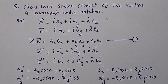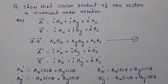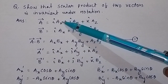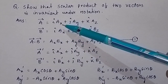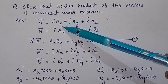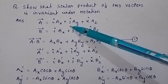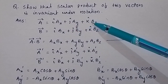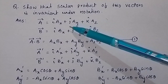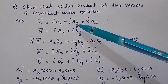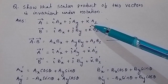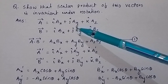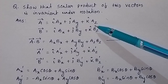The scalar product of two vectors is invariant under rotation. Consider two vectors A and B. Suppose vector A is equal to i-cap AX plus j-cap AY plus k-cap AZ, where AX, AY, and AZ are components of the vector along the X, Y, and Z axes respectively.